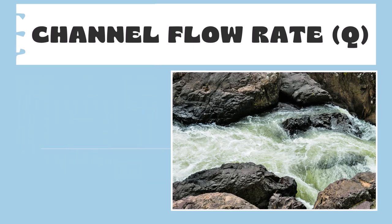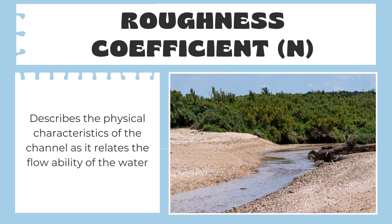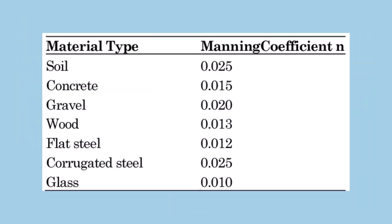Roughness coefficient n describes the physical characteristics of the channel as it relates to the flowability of the water. And Manning's n is a coefficient which represents the roughness or friction applied to the flow by the channel. You can see in the tables Manning's coefficient n values. You can see with something like soil, it has a higher coefficient than concrete or wood. So you can intuitively see which kind of surfaces would have a higher Manning's n and which ones would have a lower Manning's n.